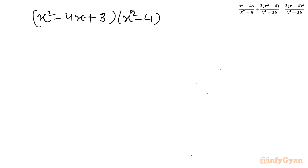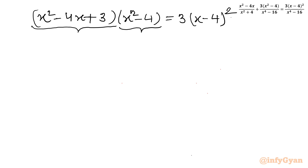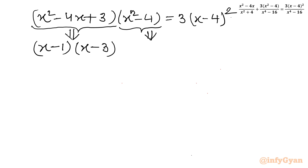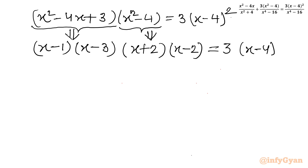Now I will apply the difference of two squares and factorize. So I can write after factorization: (x² - 4x + 3) becomes (x - 1)(x - 3). And (x² - 4) using the difference of two squares becomes (x + 2)(x - 2). The right hand side remains 3(x - 4)².